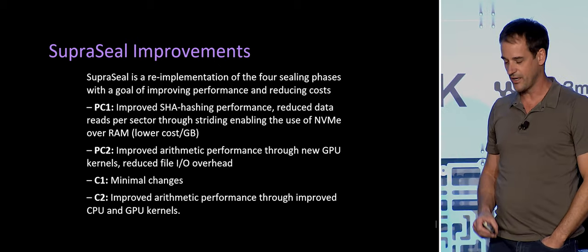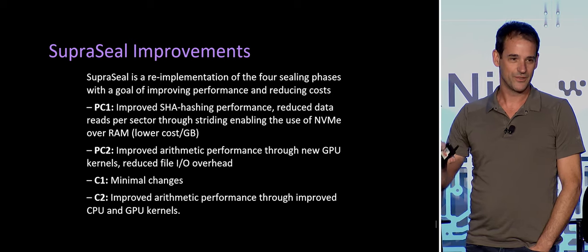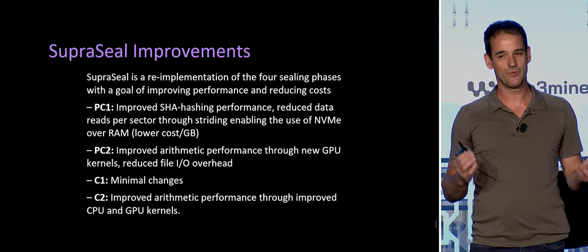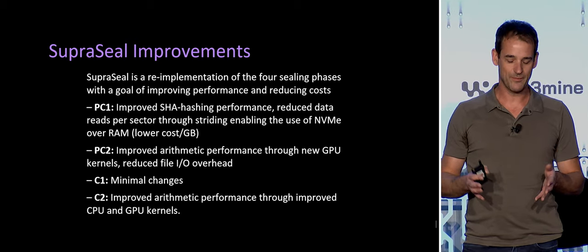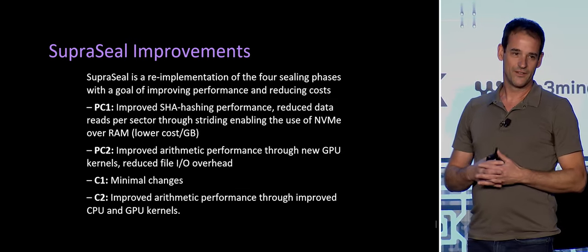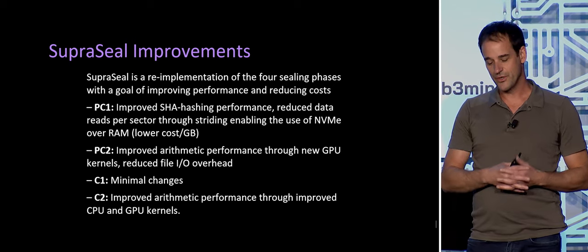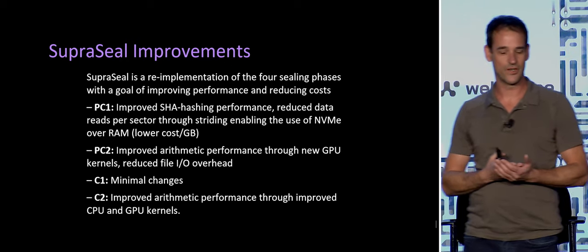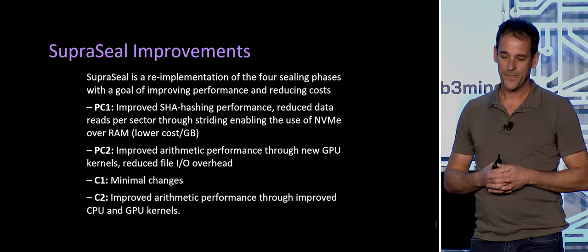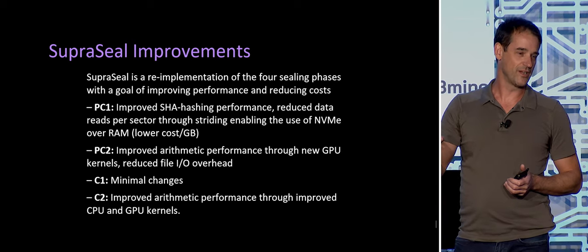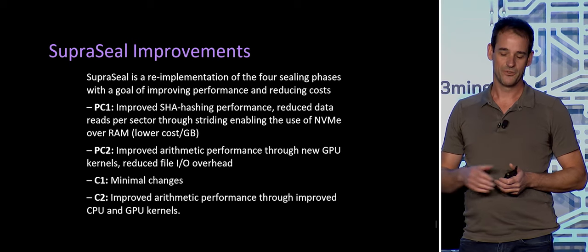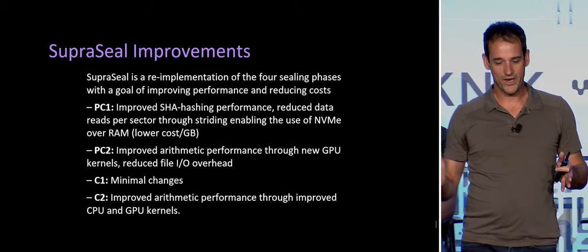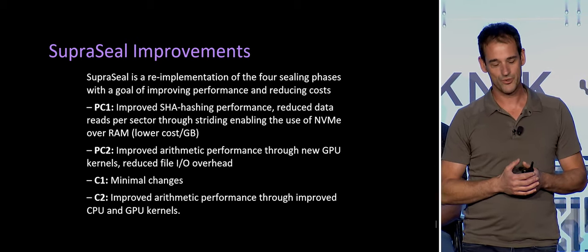For each step, we took them down to the bare bones of the computation needed. For PC1, we looked at SHA hashing — it requires a lot of cores. In the original software, four cores per sector were used; in ours, we do four sectors per core, an 8x improvement in core utilization. Where in the past we used RAM to store a lot of temporary data, we shifted that to NVMe drives, which have a lower capital cost. By having 128 sectors, we amortized through the I/O, resulting in a pretty tremendous improvement in PC1 efficiency.